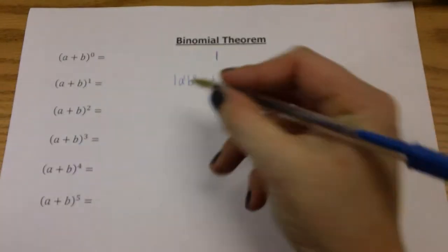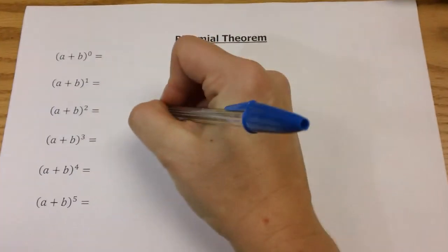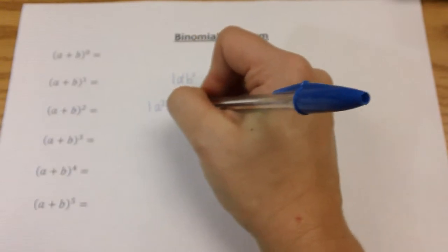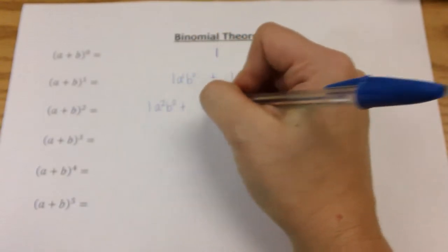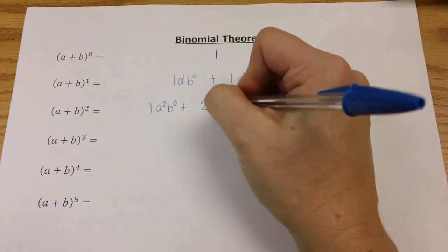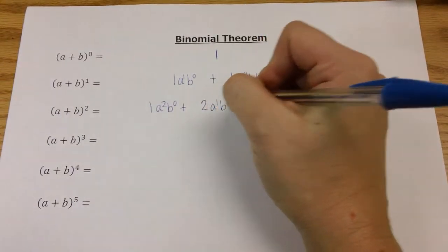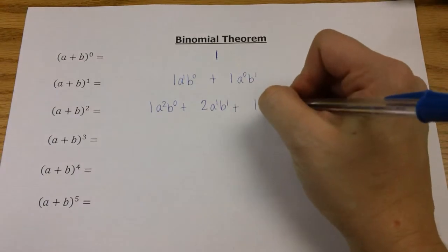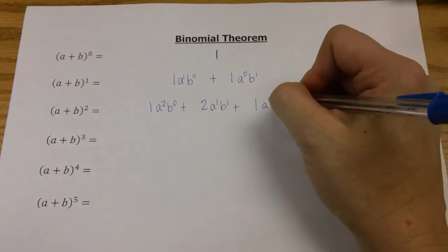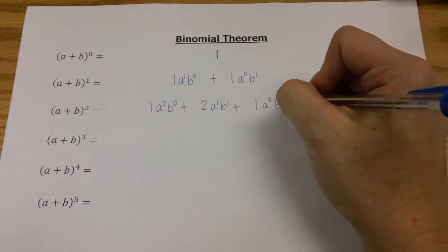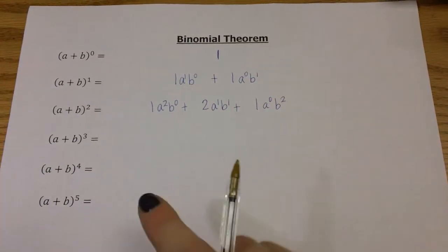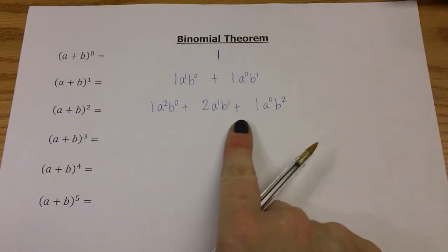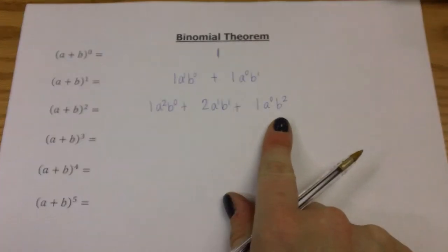For the next one, we're going to write one a squared b to the zero, plus two a to the first b to the first, plus one a to the zero b to the second. That is a squared plus two ab plus b squared.